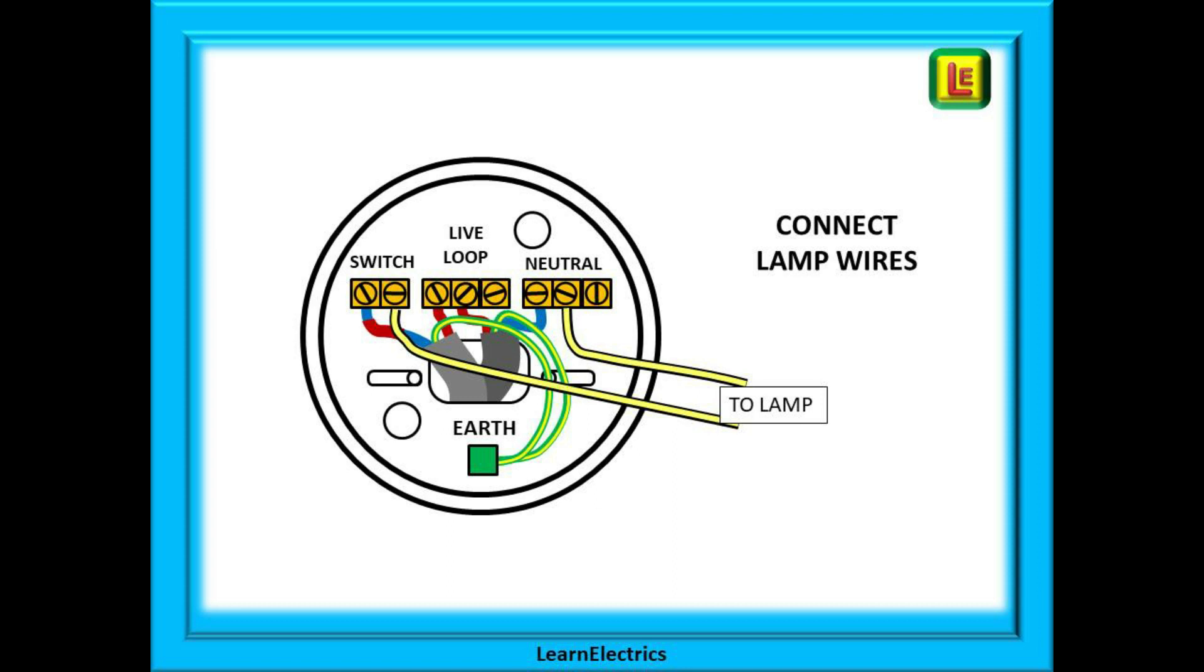One wire into the empty hole in the switch block and the other into a hole in the neutral block. If the lamp is a standard UK bayonet fitting then the order does not matter.